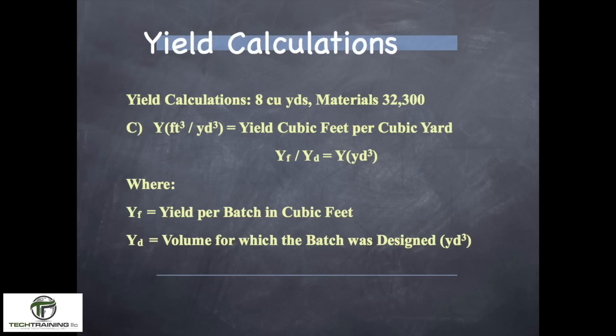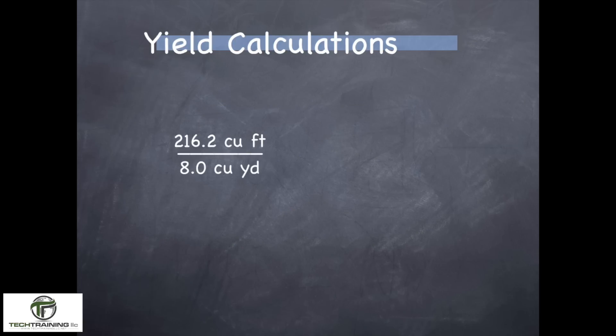Now this yield calculation is yield in cubic feet per cubic yard. To do the actual calculation is quite simple — we take our yield per batch in cubic feet, which we know is 216.2 cubic feet, and divide it by the volume per batch for which the concrete was designed, which was 8 cubic yards. The actual calculation is yield per batch in cubic feet divided by the volume of concrete for which the batch was designed. So here: 216.2 cubic feet divided by 8 cubic yards gives us 27.0 cubic feet per cubic yard, which is exactly where we should be.